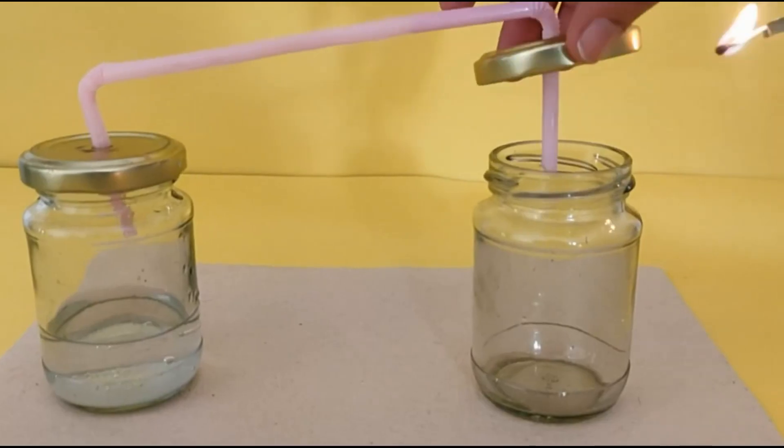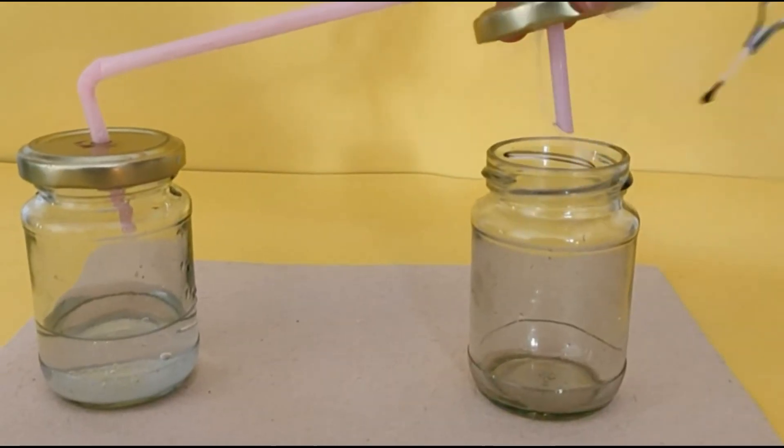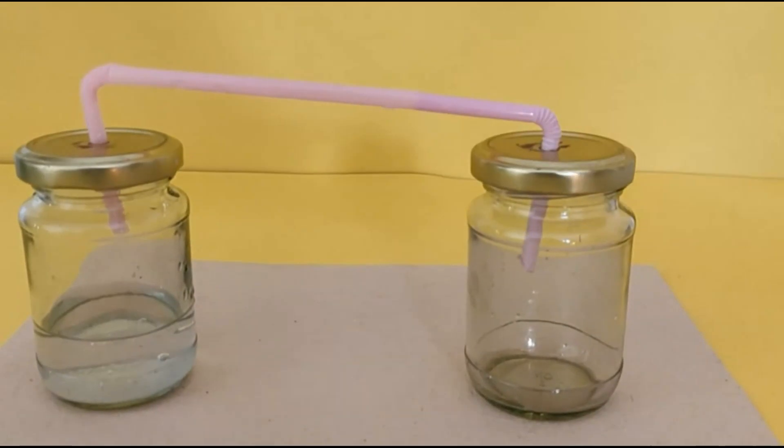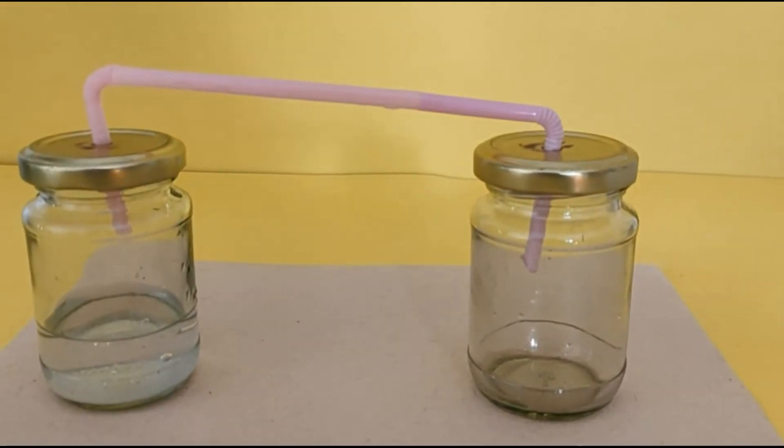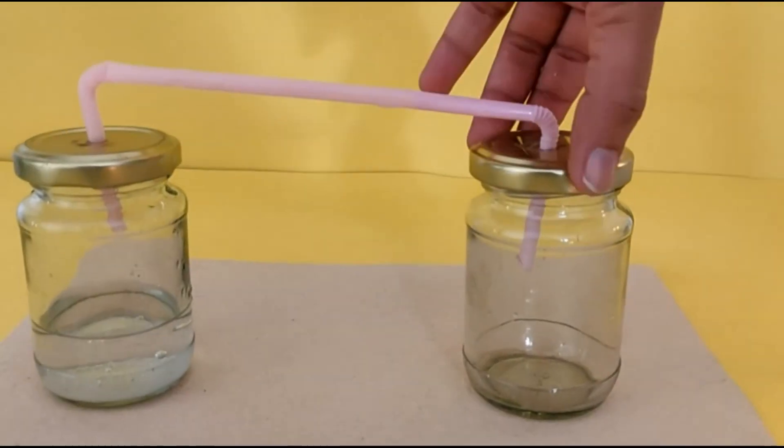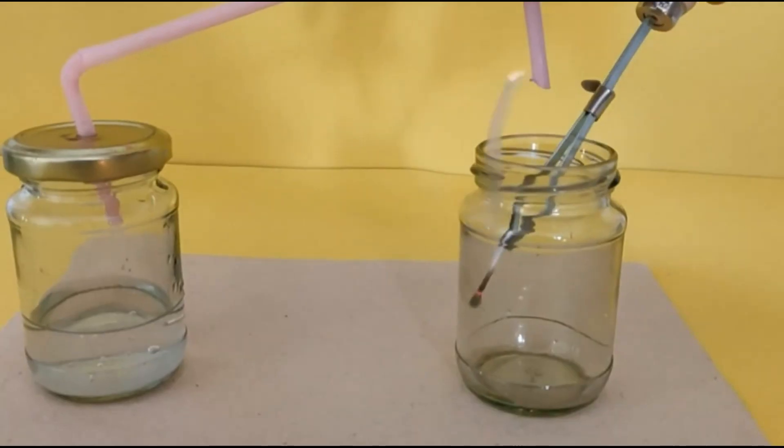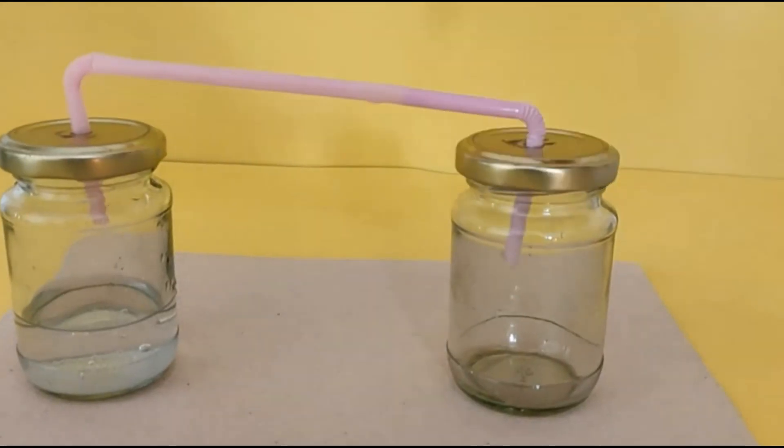If you bring a burning splinter into the jar, immediately it puts off, because carbon dioxide puts off the flame.